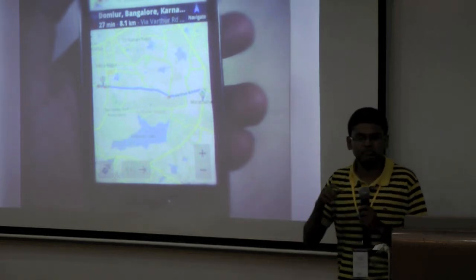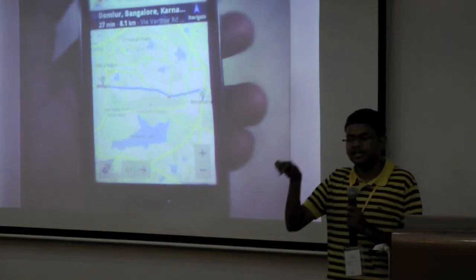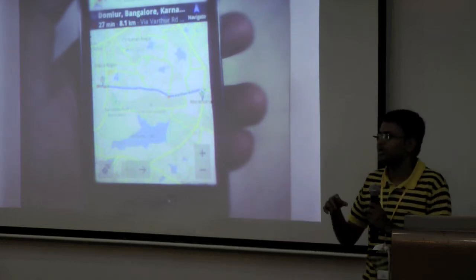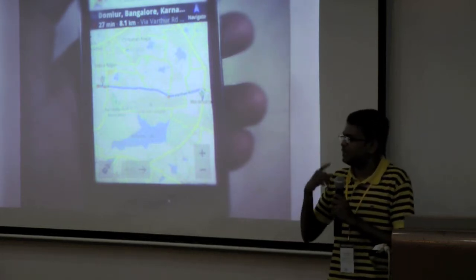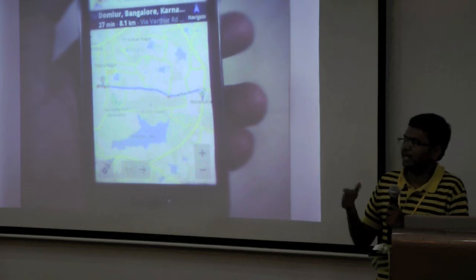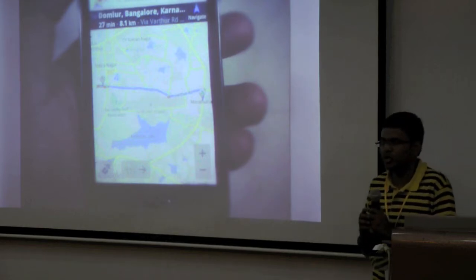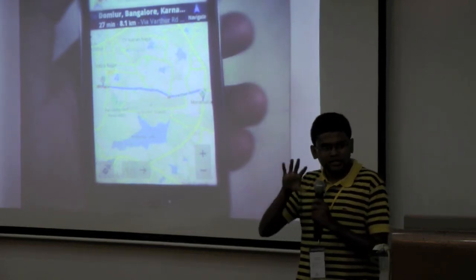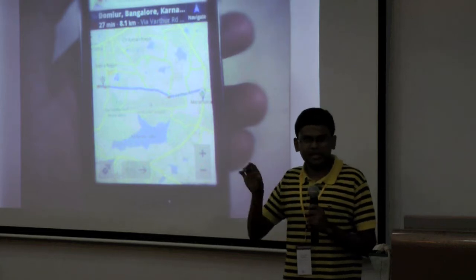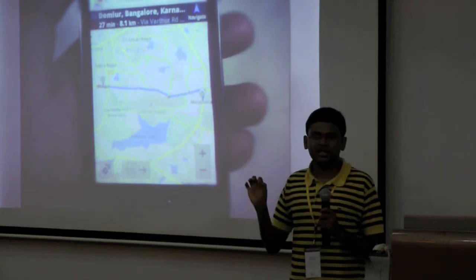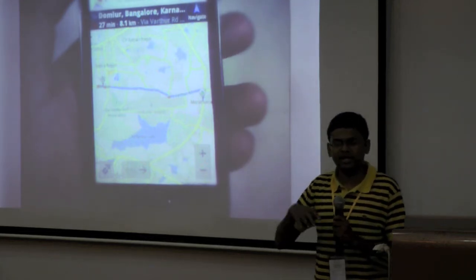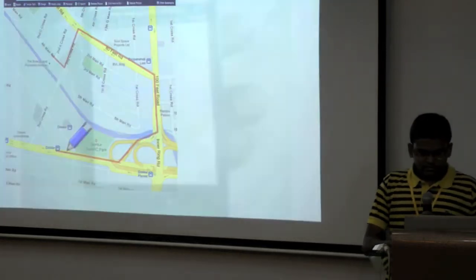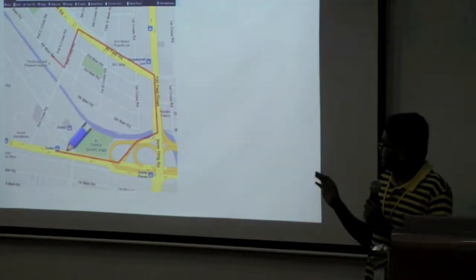If one of my friends wants to come to my place, he comes to that landmark and then gives a call asking how to get there. It always happens that the last connection happens through a phone call. So I was looking for a solution where the map can be drawn easily with a pencil-kind of tool on the web and I could share it with my friend. That was basically the idea.